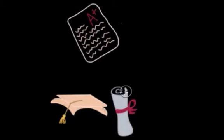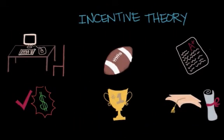Studies have shown that if the reward is given immediately, then the effect of the behavior occurring again is greater. The rewards can't be impossible to reach, or that person isn't going to feel motivated to perform that behavior again. If someone feels that the reward is impossible to get, then they're going to be less motivated to strive for it.